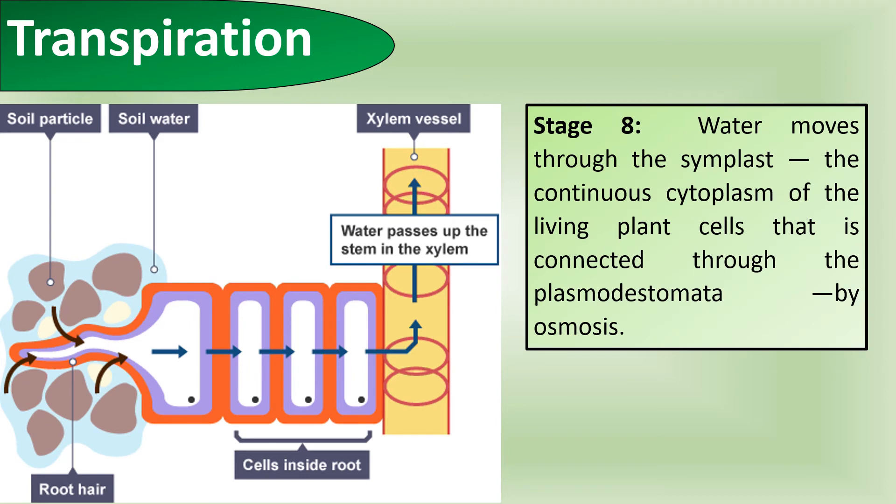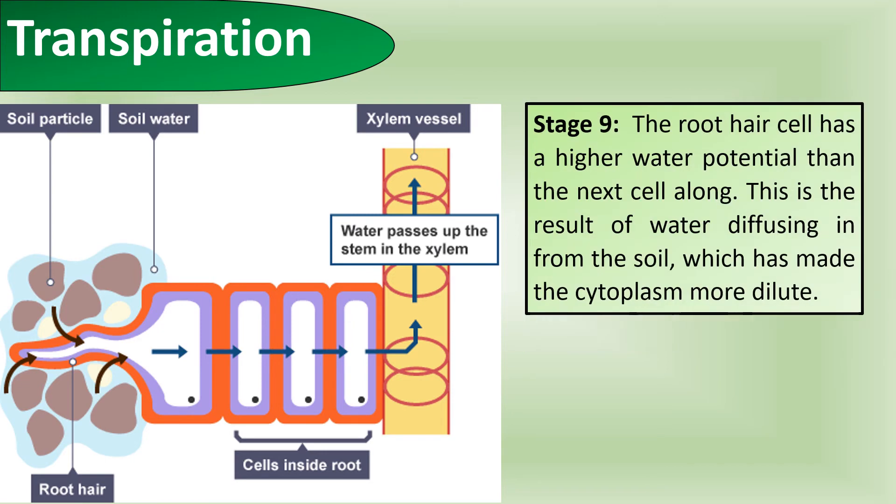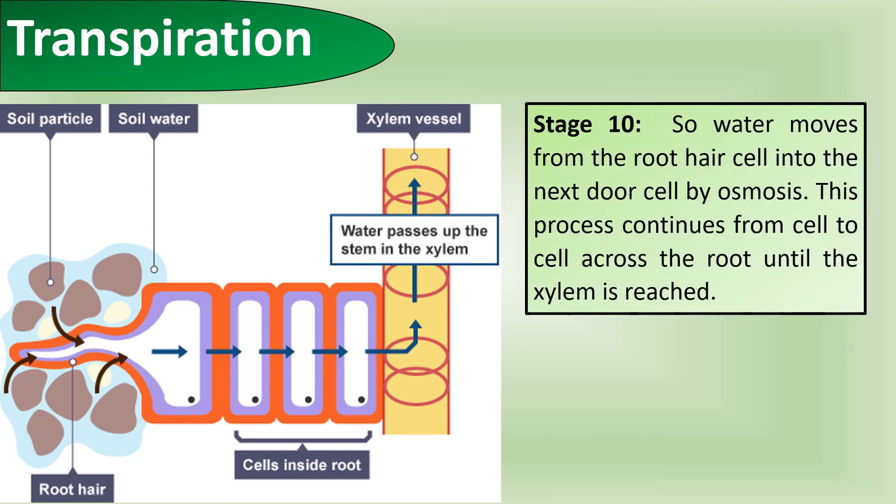Water moves through the symplast, the continuous cytoplasm of the living plant cells that are connected through the plasmodesmata by osmosis. The root hair cell has a higher water potential than the cell next to it. This is the result of the water diffusing in from the soil, which has made the cytoplasm in this cell more dilute. So water moves from root hair cell into the cell next door to it by osmosis. This process continues from cell to cell across the root until the xylem is reached.